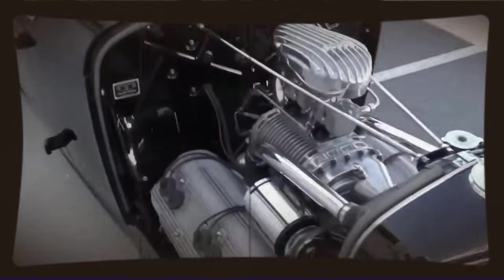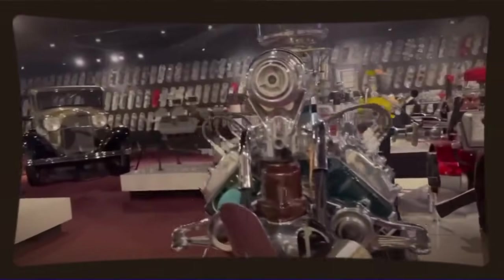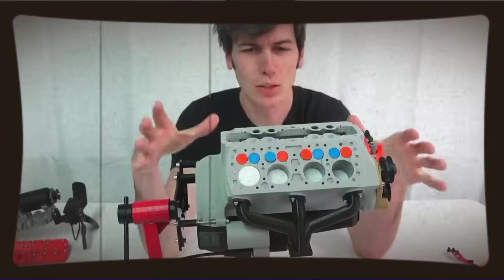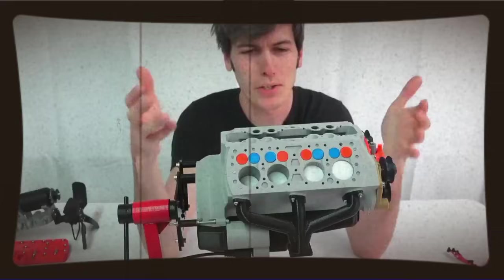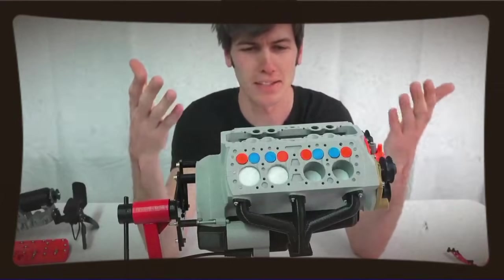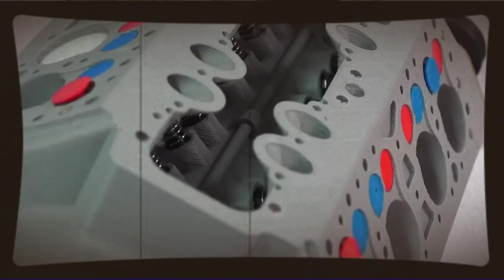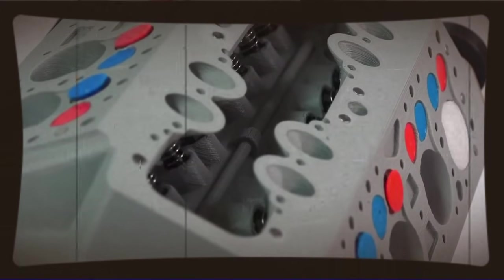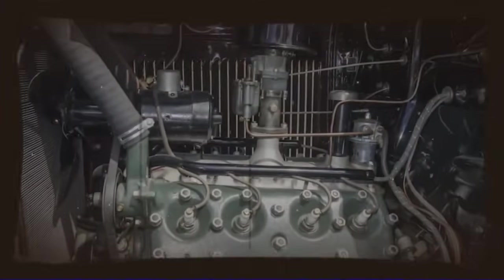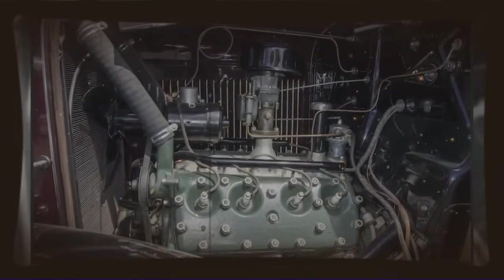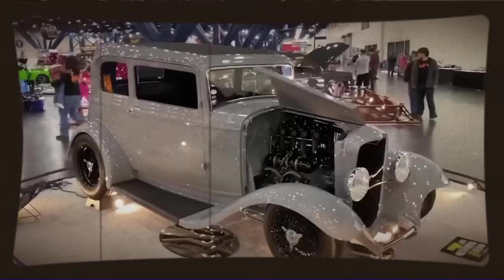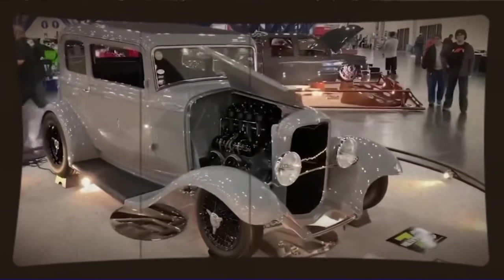Ranto's engine reportedly produced somewhere in the neighborhood of 90 to 100 horsepower, which might not sound like much today, but remember, we're in 1932. Ford's Flathead V8 was making 65 horsepower and that was considered phenomenal. So Ranto's engine, at least on paper and in testing, was producing significantly more power from a smaller displacement. The power-to-weight ratio was exceptional because the engine itself was lighter than a comparable four-stroke and it was making more power per liter of displacement.